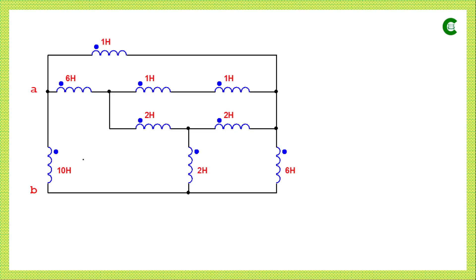Now we will simplify the inductive circuit, finding the equivalent inductance with respect to points A and B. We start simplifying from the other side. Looking closely, this one Henry and this one Henry inductor are connected in series and can be easily simplified. Otherwise, none of the other inductors are connected in series or parallel. We can see that these three inductors are connected in delta — between point one and two, between point two and three, and between point three and one — with no neutral point.